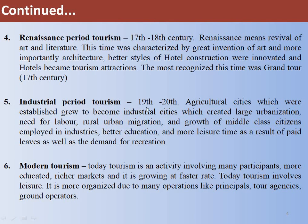Industrial Period Tourism happened between the 19th and 20th century, when agricultural and industrial cities were established. Key features included a need for labor, rural-urban migration, growth of a middle class employed in industries, better education, more leisure time as a result of paid leave, and demand for recreation. People wanted recreation because many cities had grown and urban migration had occurred, and more leisure time was granted to them.